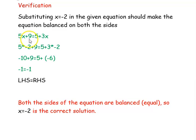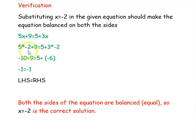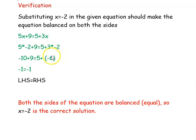The given equation is 5x plus 9 equal to 5 plus 3x. Instead of x, we are going to substitute minus 2. So: 5 into minus 2 plus 9 equal to 5 plus 3 into minus 2.